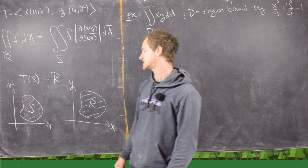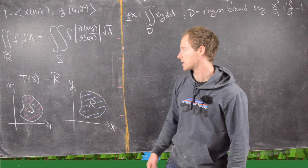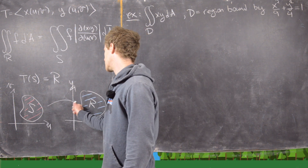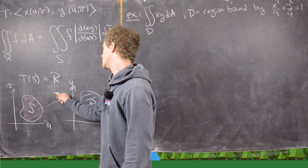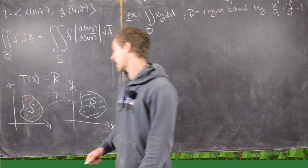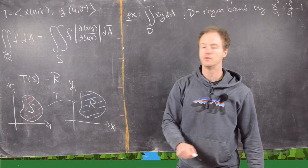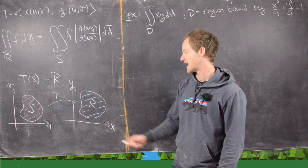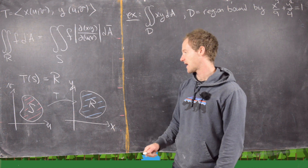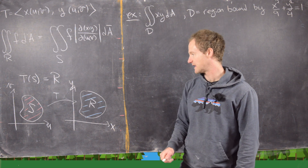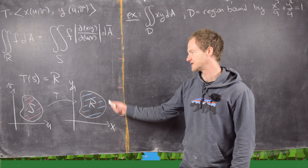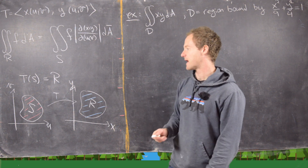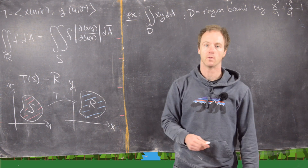We have T of S equals R, and so the picture goes like this. We have something happening over here in the uv plane, which is region S, something happening over here in the xy plane, which is region R, and T is mapping them one-to-one.